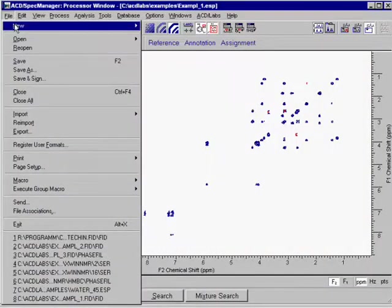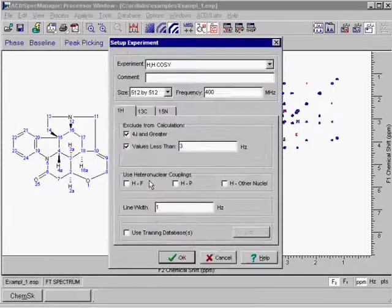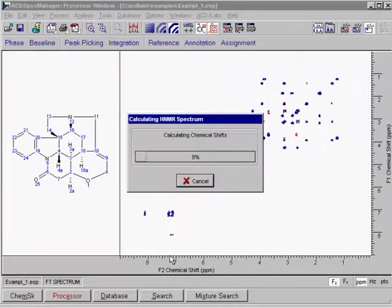We'll start with a processed spectrum and an attached structure. To predict the corresponding spectrum, under the File menu, point to New and choose Calculate 2D NMR.